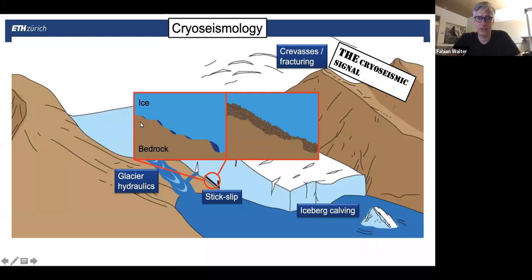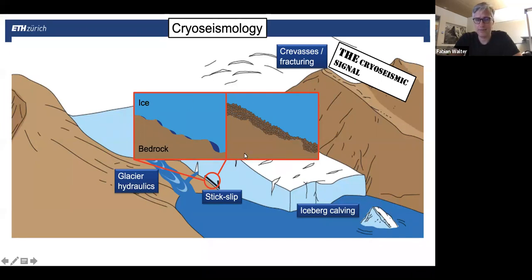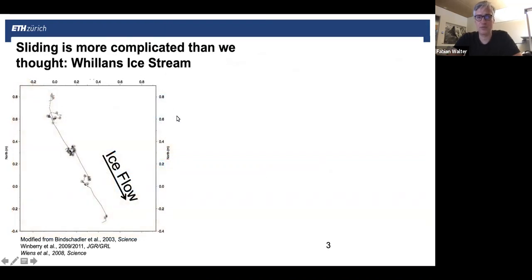People have been thinking about how glaciers slide for quite some time. The original idea was that the glacier manages to flow around bed undulations, or it melts itself around bed undulations, sometimes aided by water pockets at the lee side of these undulations. People also noticed that glaciers are often underlain by weak till layers — unconsolidated sediments that can deform and participate in basal motion. This is the traditional view, and these are rather slow processes.